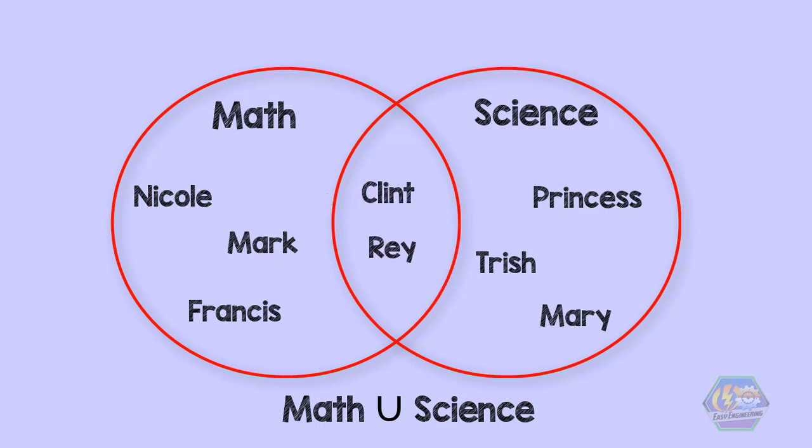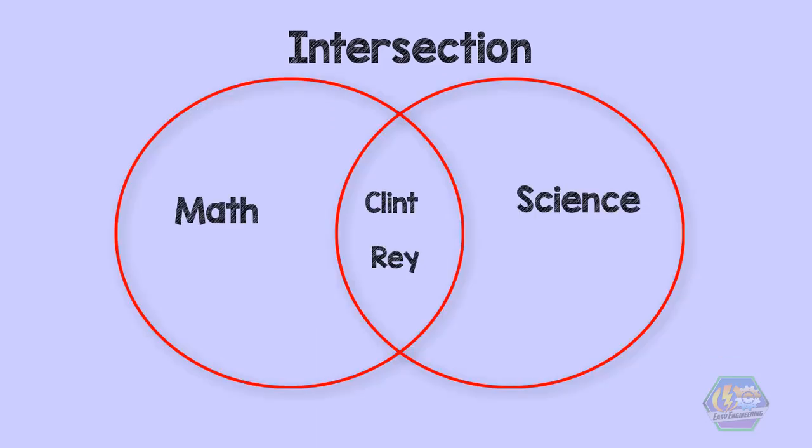Now let us discuss another operation in sets. This is called the intersection. Intersection is when you must be in both sets. In our example, two students both like math and science, and that is Clint and Ray. The special symbol for intersection is an upside-down U, like this in the figure. This is how we write it. If we illustrate it in a Venn diagram, it looks like this.